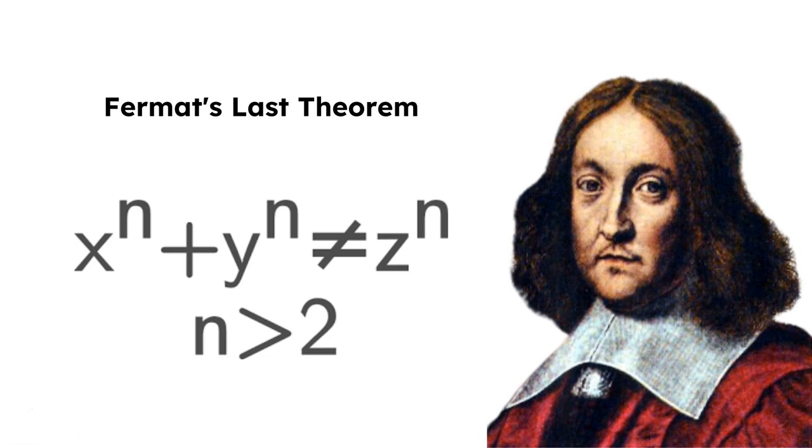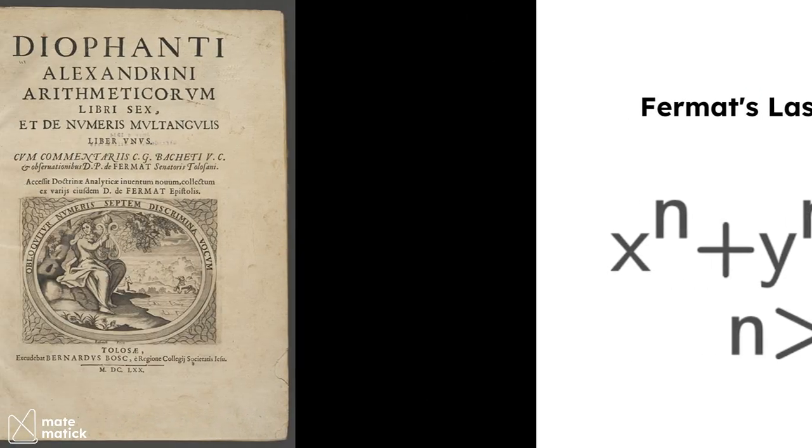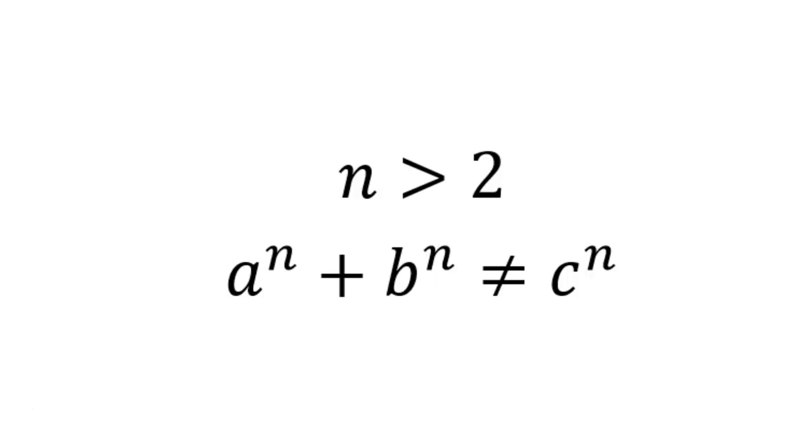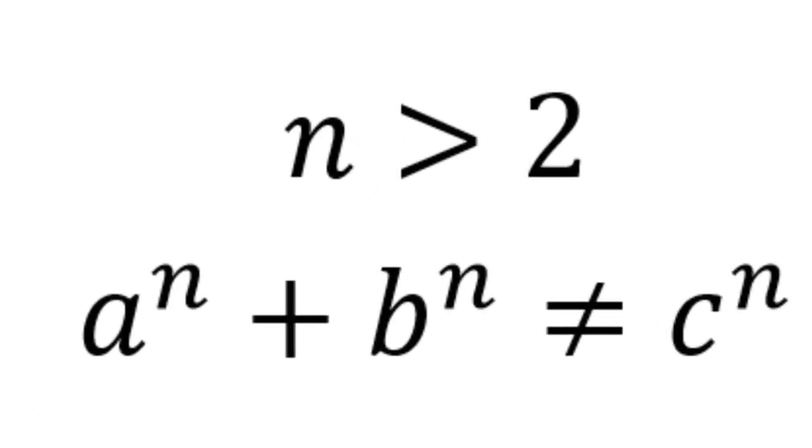Fermat's last theorem stands as one of the most tantalizing problems in mathematics. Pierre de Fermat wrote in the margin of his copy of Diophantus's Arithmetica that he had found a truly marvelous proof for the theorem, stating that for any integer value of n greater than 2, there are no three positive integers a, b, and c that satisfy the equation a to the power of n plus b to the power of n is equal to c to the power of n.